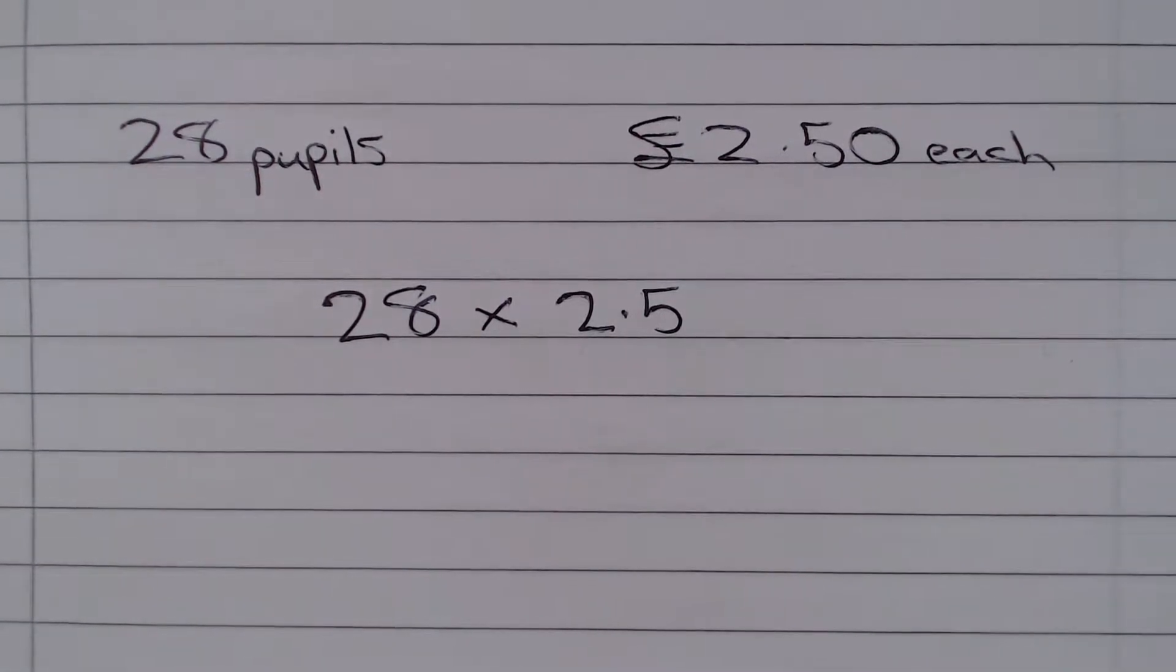Now there are a few ways of doing this. You can do this in a grid, you can notice that multiplying a number by 2.5 is the same as multiplying it by 2 and then adding on half the number.